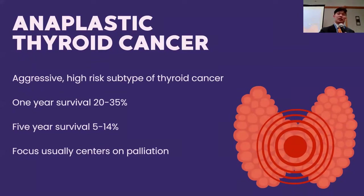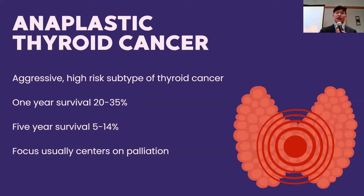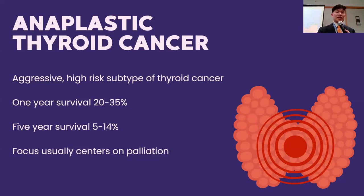Finally, a few slides on anaplastic thyroid cancer. This is a very aggressive but rare high-risk subtype. Previously, one-year survival was 20 to 35 percent, five-year survival five to 14 percent — dramatically different from papillary or follicular thyroid cancers. Whenever we see this, we used to think we're going to focus on palliation because cure is really difficult. Usually the only times we would cure anaplastic thyroid cancer was when we did it by accident — when a very small nodule was already cut out completely and we found after the fact that it was anaplastic.